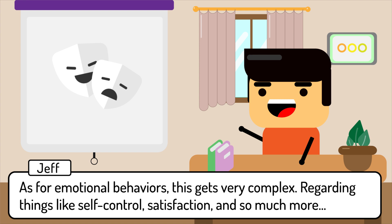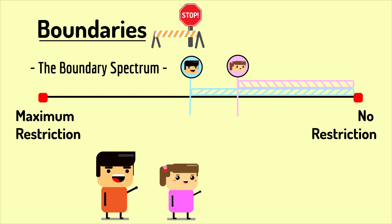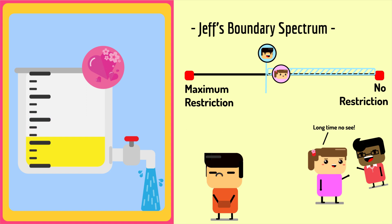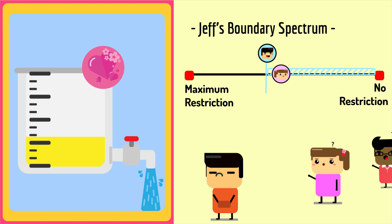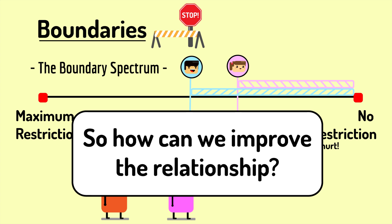As for emotional behaviors, this gets very complicated regarding things like self-control and satisfaction, so I'll leave it for another time. For now, let's stick to the more obvious physical behaviors. Every boundary starts somewhere — let's call it the baseline: an area representing what we are not comfortable with the other person doing. As soon as someone crosses into my baseline, I'll get triggered and view it as cheating, even if the behavior did no harm to the relationship. We create our baselines as a way to protect ourselves from getting hurt. So, how can we improve the relationship?